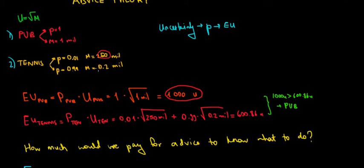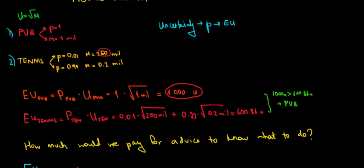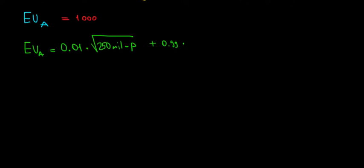The certain option gives us 1 million, whereas the failure case gives us only $200,000. So if the advisor tells us that we are going to fail, if he gives us the certain information, then we will go for the certain option. So we would go for the 1 million. But again, even if that happens, we still have paid for that advice. We still have paid the price, so we have to take that into account.